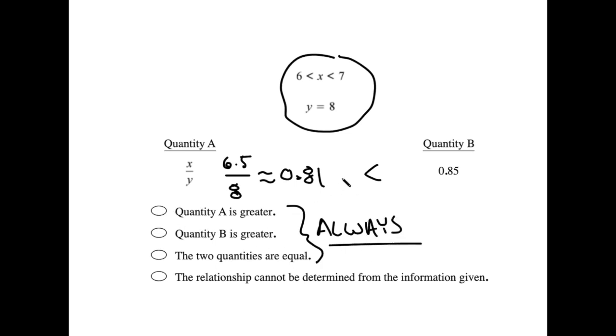And it's helpful to remember that. Is b always greater? Could there be some other number we could plug in for x that would make quantity a greater than quantity b, or maybe even equal to it? Well, there is. And here it is. Let's plug in something higher in that range, 6.9 maybe.